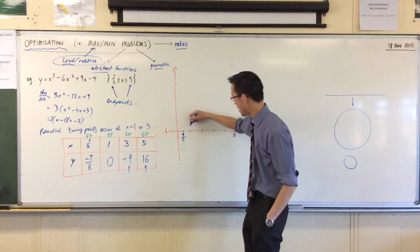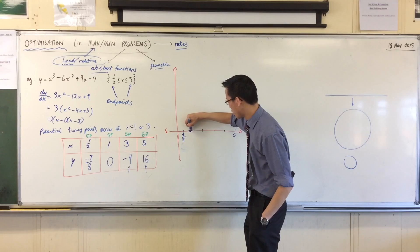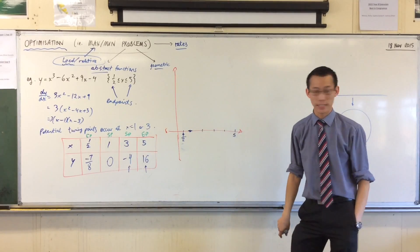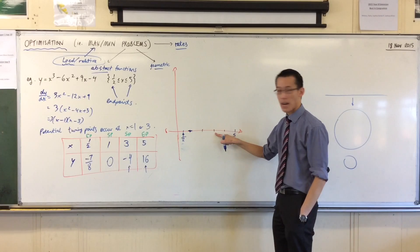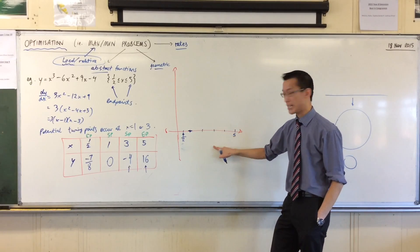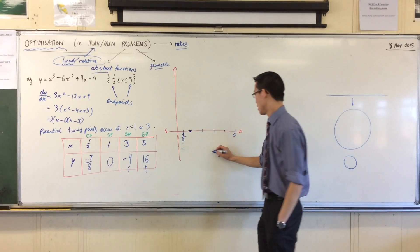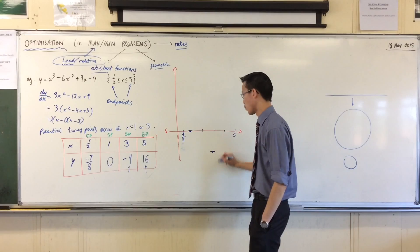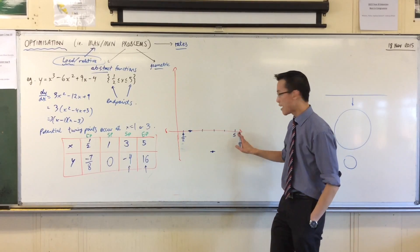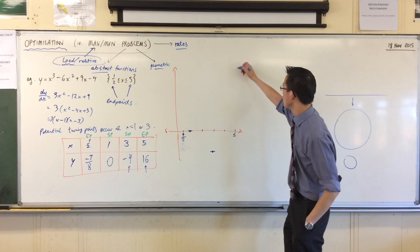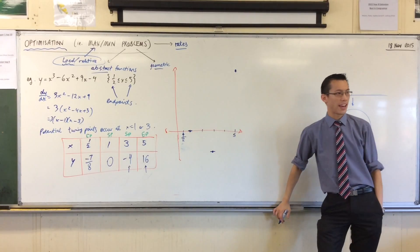At one which is right there this is a stationary point right so I'm not only going to put a point down I'm going to put the horizontal line there as well to indicate what's happening. At three one two three I'm at negative four so that's like down here somewhere right down here. So I'm going to put that there and I'm also going to put a horizontal line through it to indicate it will be a stationary point in a second and then at five I'm all the way up at 16. There's my endpoint.